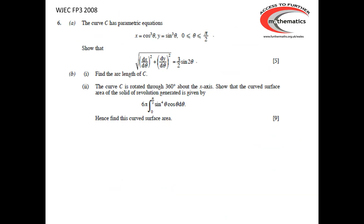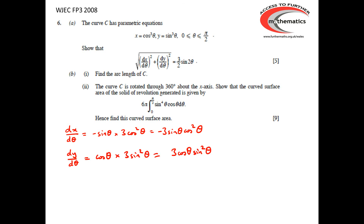Moving on to a second example from the 2008 paper — a curve given parametrically. The first part of the question asks us to work out the square root of (dx/dθ)² + (dy/dθ)². The second part uses that result to find the arc length and surface area. We need to find dx/dθ and dy/dθ, both using the chain rule for differentiation.